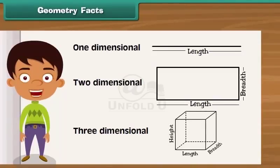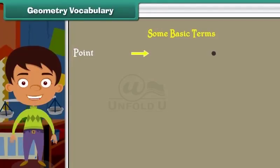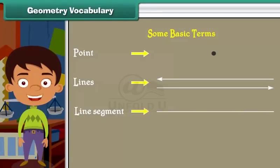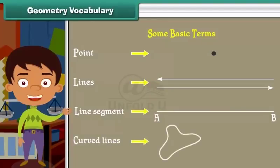Geometry vocabulary. Let us know about some basic terms used in geometry. Point: it is an imaginary dot. Lines: all these are straight lines. Line segment: part of a line is called a line segment. Here AB is a line segment. These are curved lines.